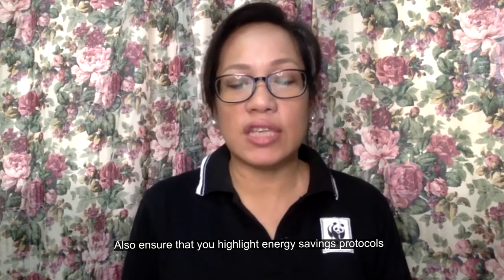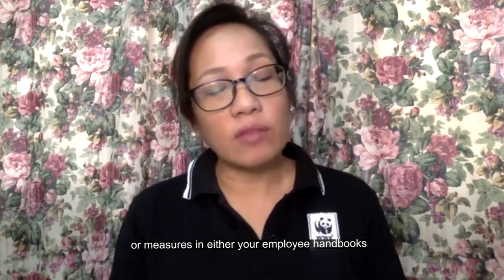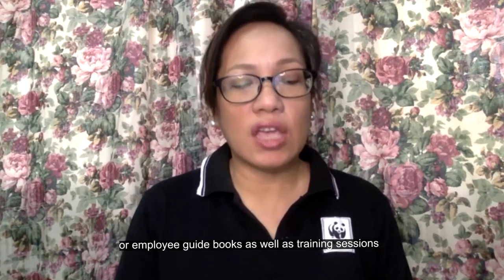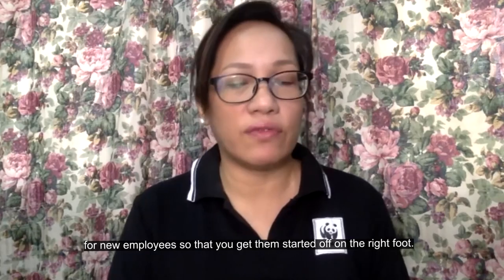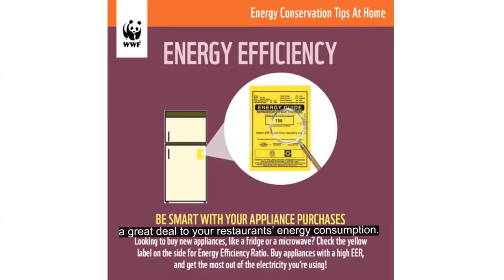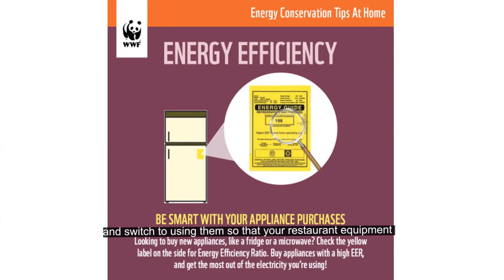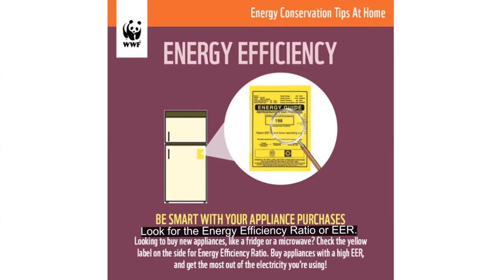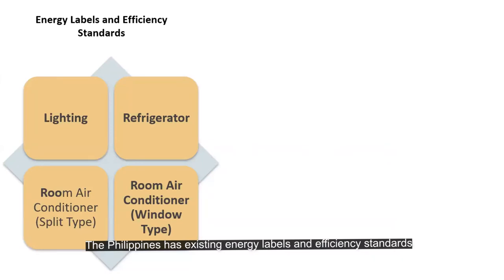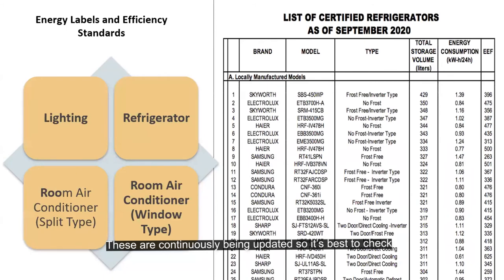Ensure that energy-saving protocols or measures are highlighted in your employee handbooks or guidebooks, as well as in training sessions for new employees. Commercial equipment contributes greatly to restaurant energy consumption, so look for energy efficient appliances and switch to them — your restaurant equipment can save your business thousands of pesos per year. Look for the Energy Efficiency Ratio, or EER — the higher the EER, the more you will get out of the electricity you're using. The Philippines has existing energy labels and efficiency standards for lighting, refrigerators, and room aircons — both split type and window type — so check the DOE website for the latest lists.